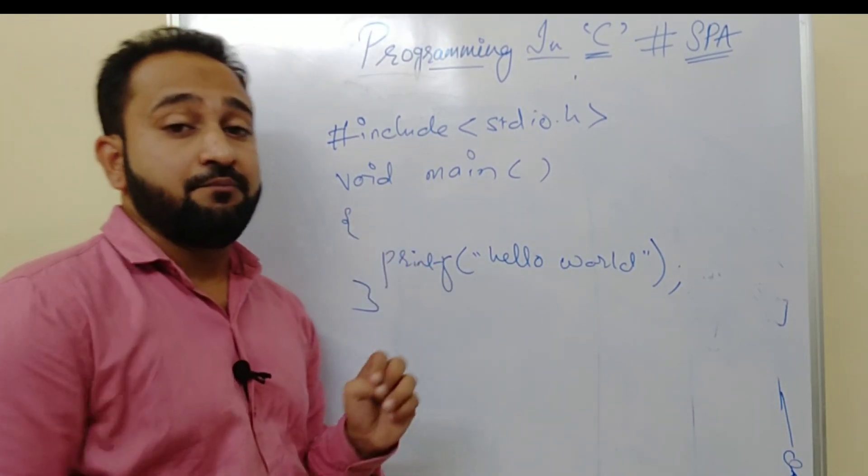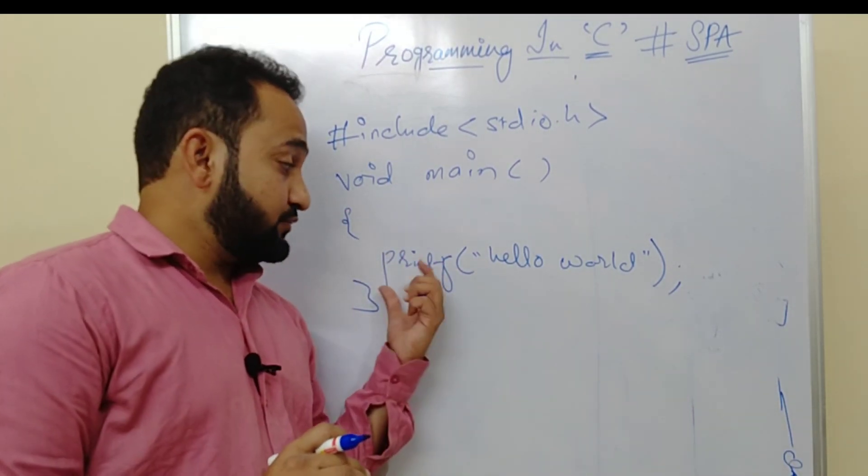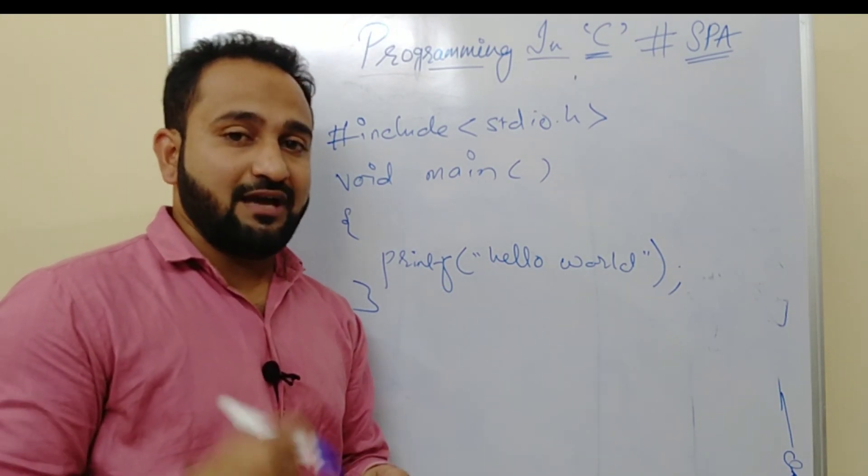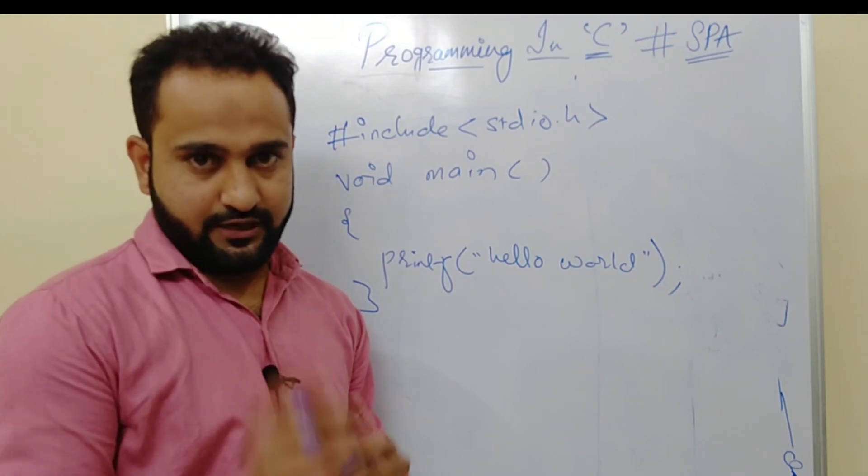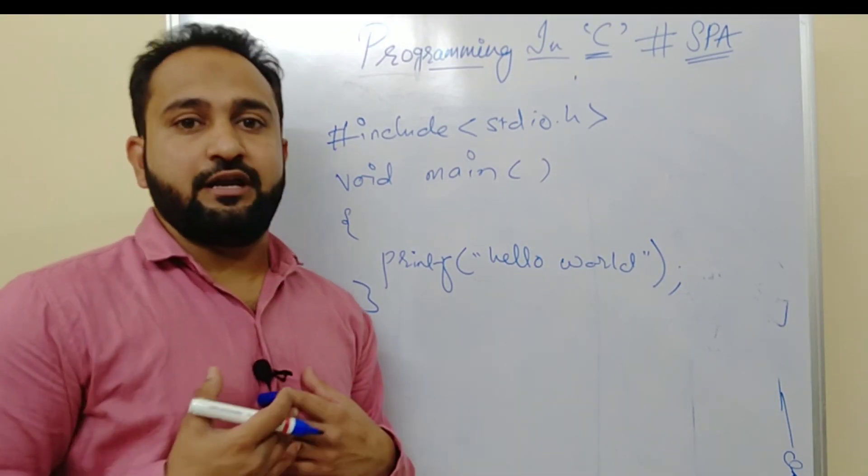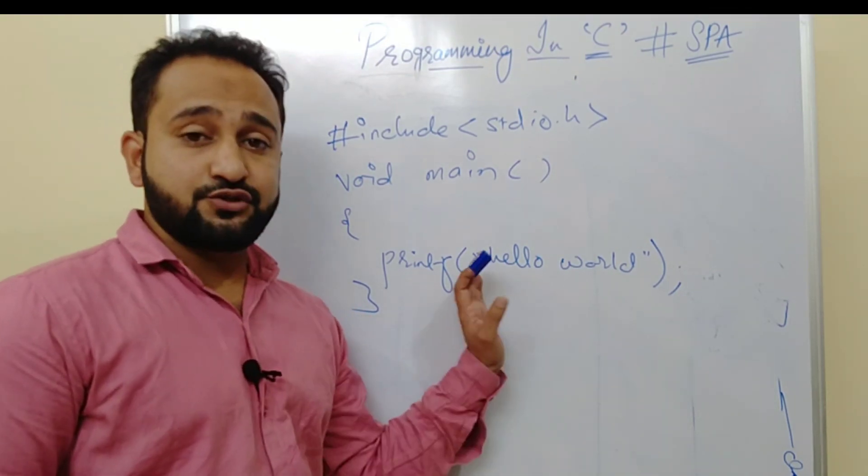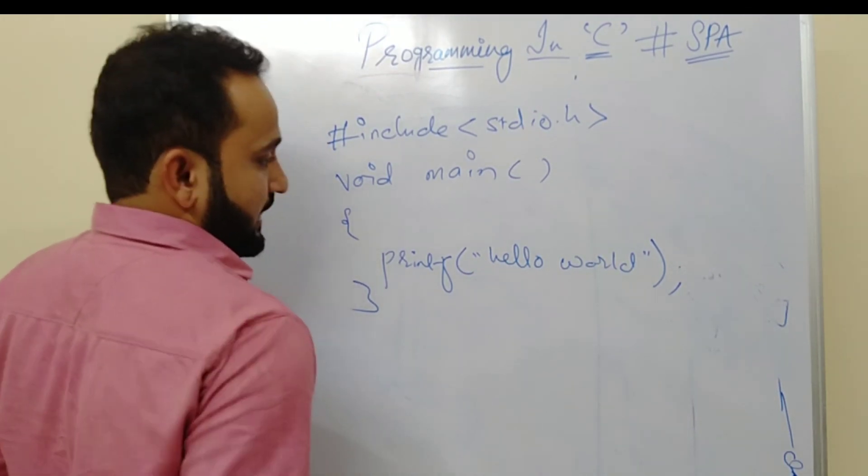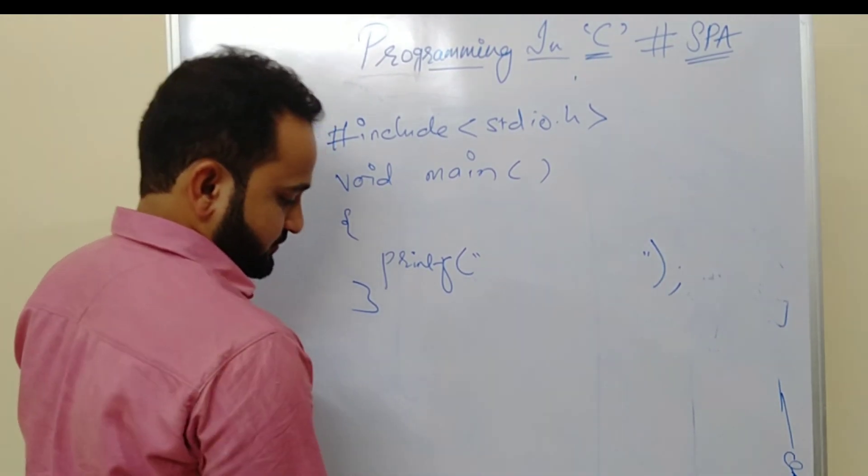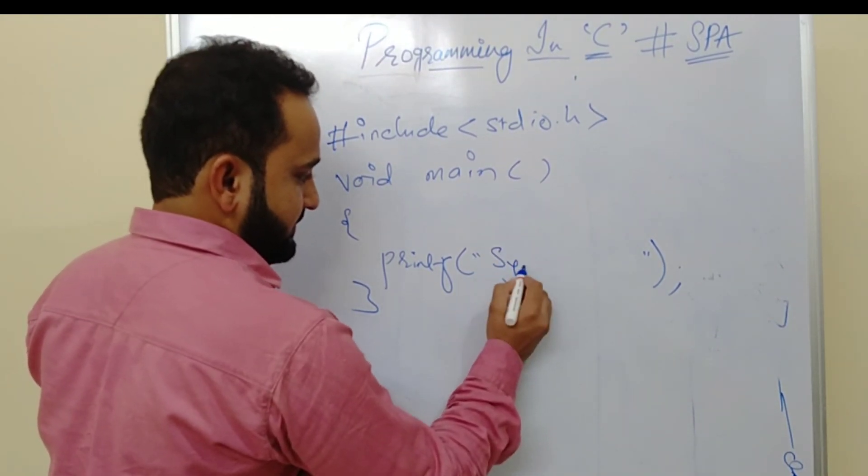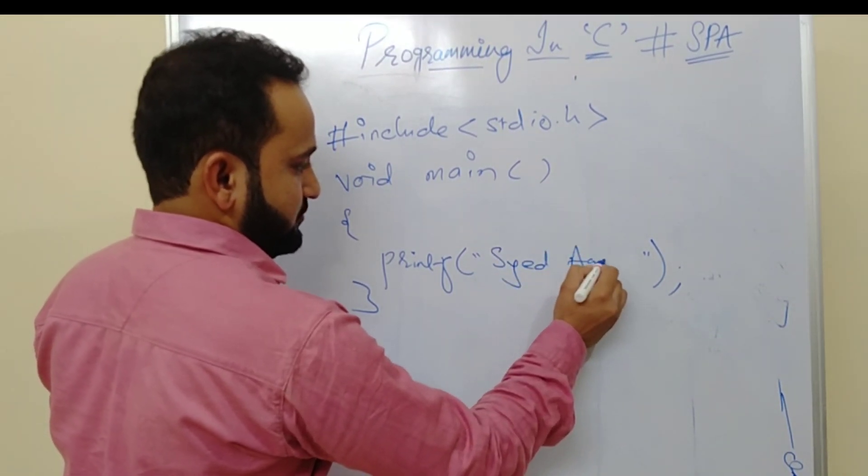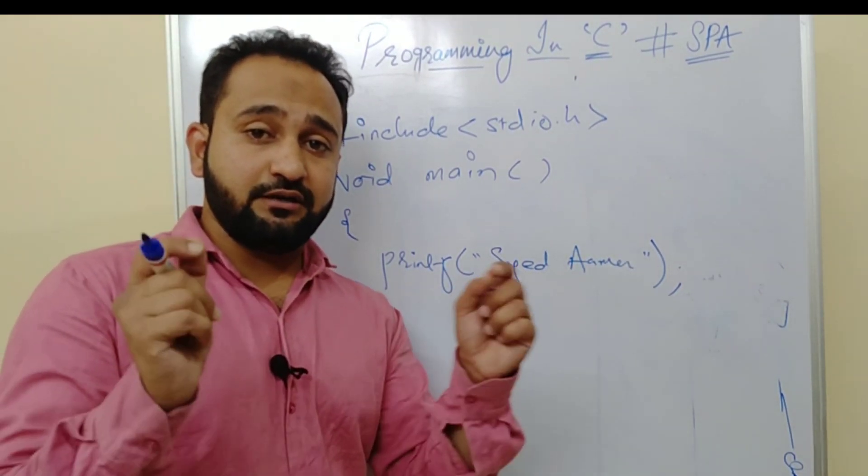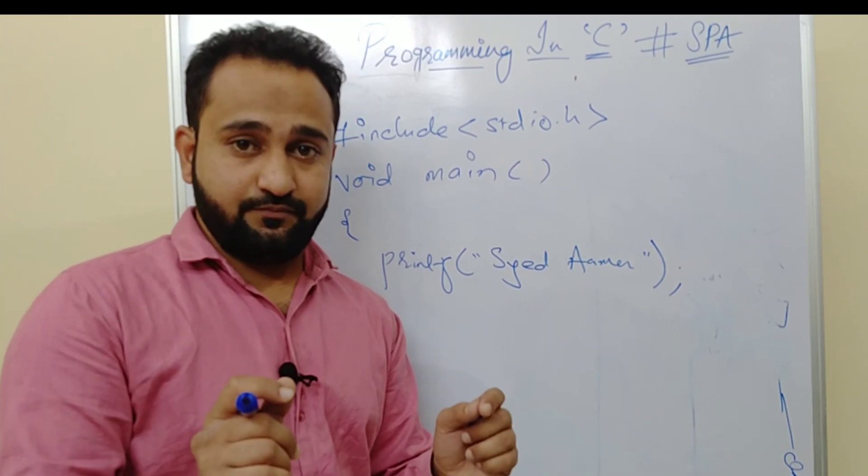So from this complete program, what do you understand? In this printf statement, in double quotes, whatever you write, that will get displayed on screen. So if I write Sayyad Amir here in double quotes, what will be the output? Sayyad Amir will get displayed on screen. Getting it?